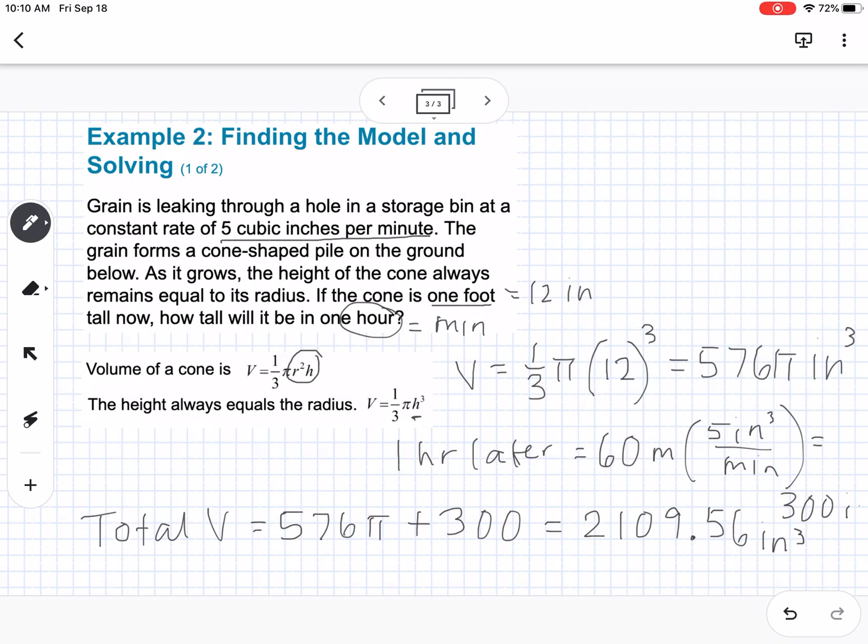And so then now I'm going to go back up here where I have more space. I'm going to solve for h in our volume equation. So we're going to say 2,109.56 equals 1/3rd pi h cubed. So if we take that number and we're going to multiply by 3 and divide by pi and then take the cube root, we get that h is equal to 12.63 inches.